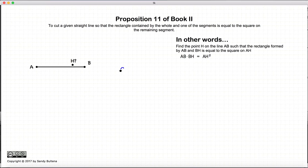We have AB times BH is equal to AH times AH, or in other words, the ratio of AB to AH will be equal to AH to BH. So we have that AB is to AH as AH is to HB. So this is exactly the same thing that we were doing in proposition 30 of book six.